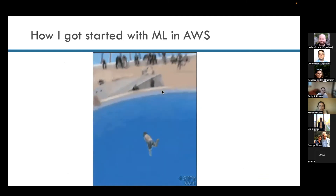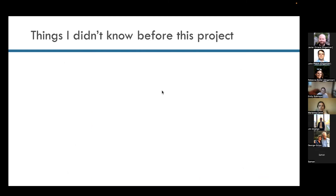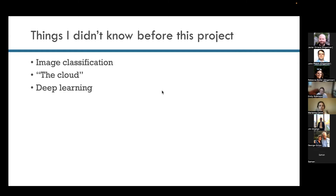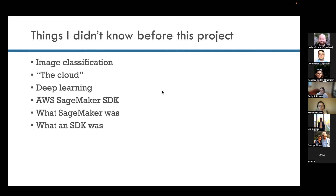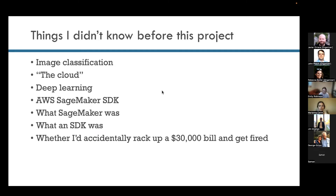Here's how I got started with AWS — basically diving in the deep end, because there were a lot of things I didn't know before the image classification project I did at Warby Parker. That included really anything about image classification, the cloud, deep learning — the SageMaker model I use is a deep learning model — the AWS SageMaker SDK, what SageMaker was, what an SDK was, and whether I'd accidentally rack up a $30,000 bill and get fired.